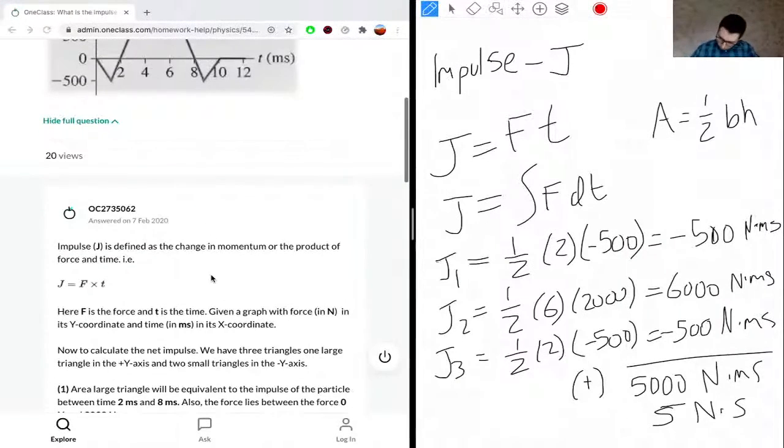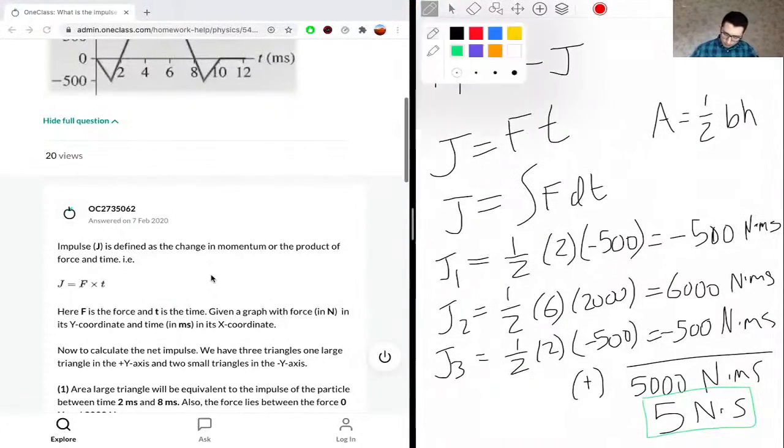That's our final answer. Let me write that more clearly. Our final answer is 5 Newton-seconds for the impulse J.